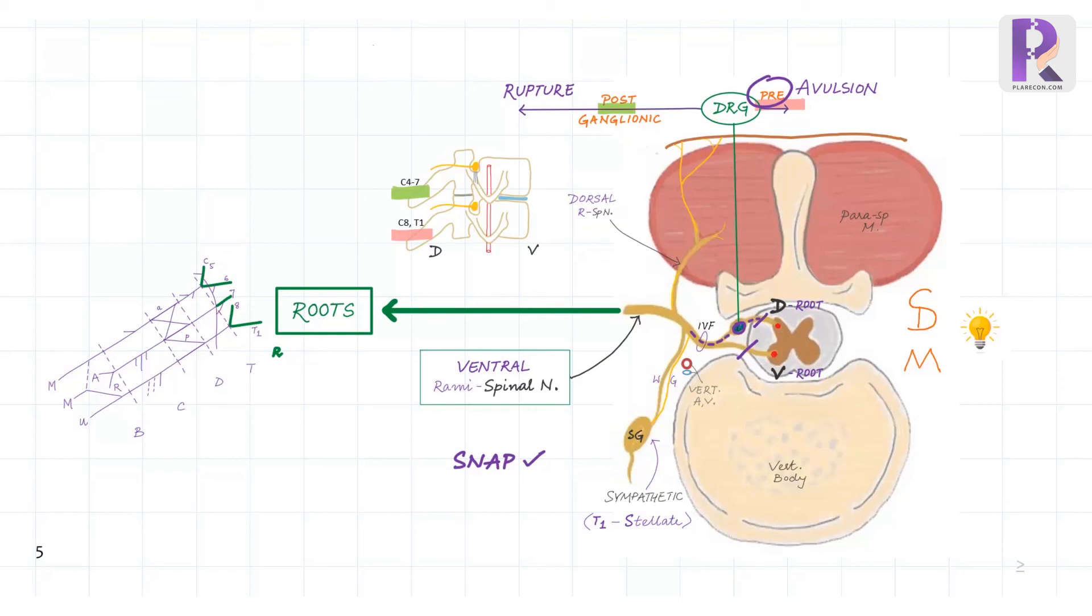On the other hand, in post-ganglionic ruptures, the motor deficit is similar. But since the sensory fibers are cut distal to the dorsal root ganglion, though the peripheral sensations are interrupted, the pathway from the cut surface through the dorsal root ganglion and spinal cord to the brain is intact. And hence, tingling in the cut surface can be elicited as positive Tinel's sign in the posterior triangle of the neck.